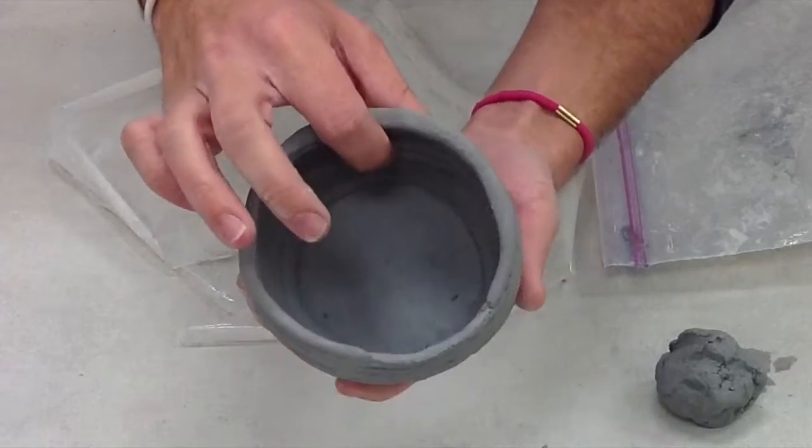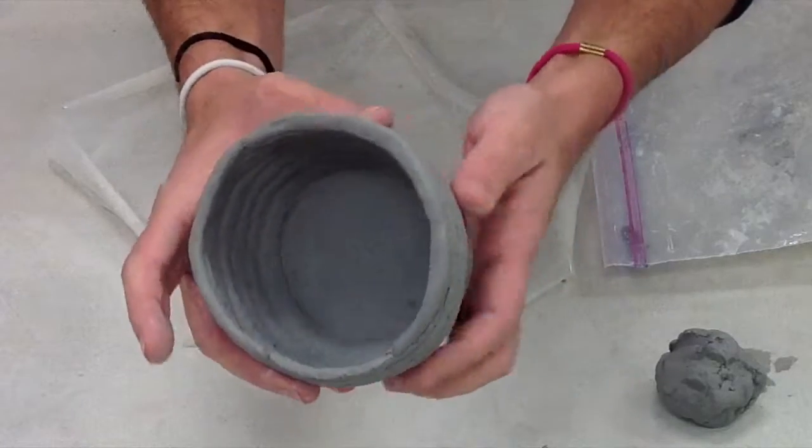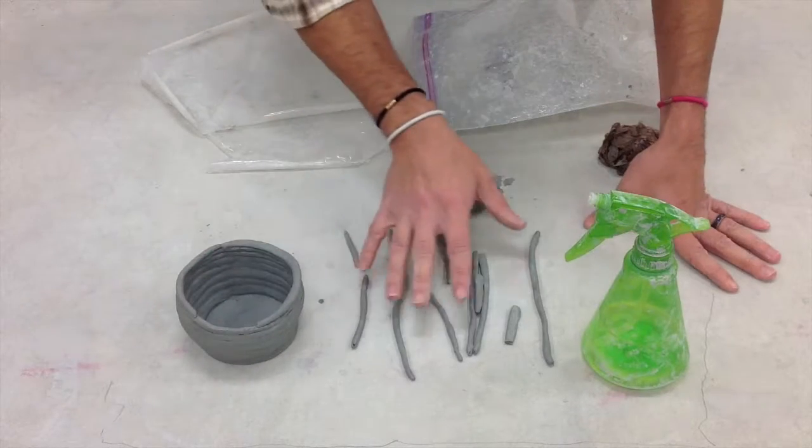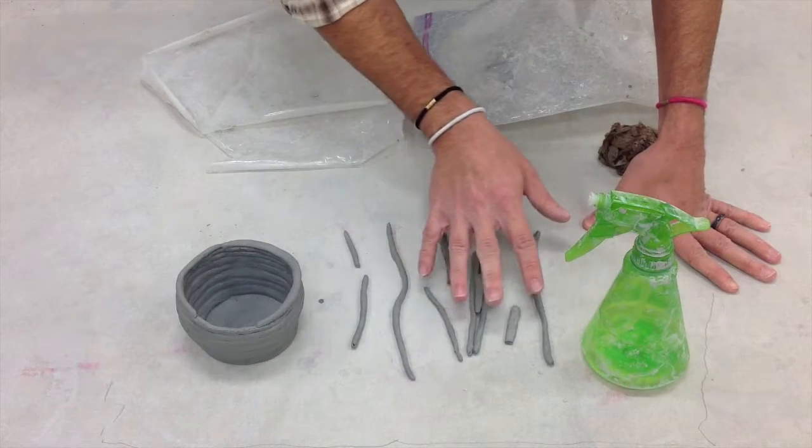We have a project here made by a student named Kesley. She's building a coil made container or vessel. She has lots and lots of different coils that she's already made.